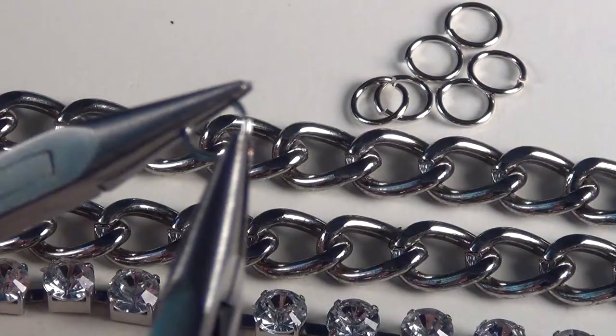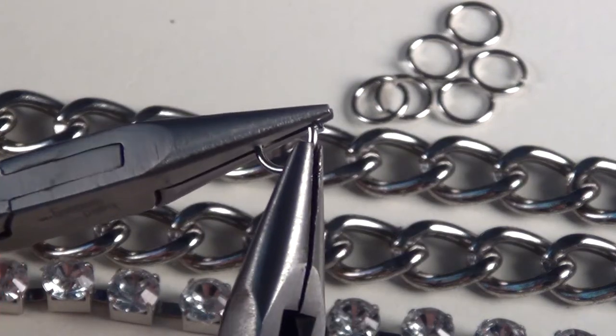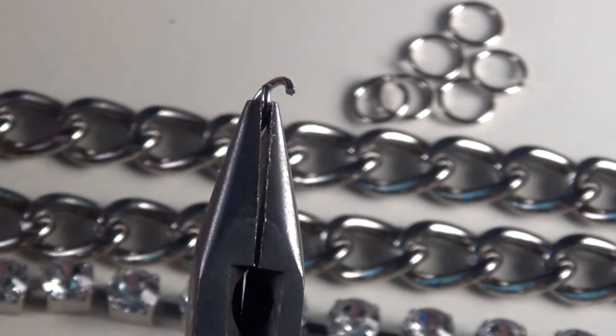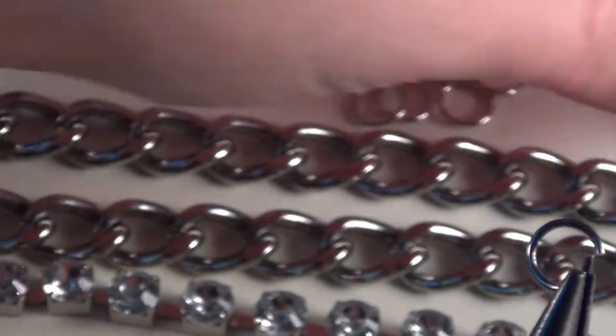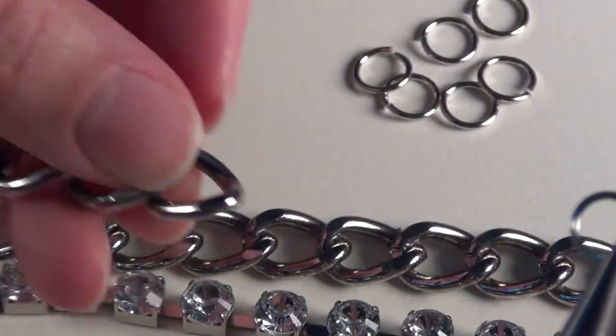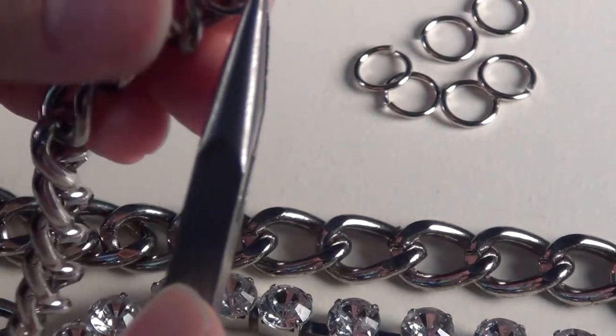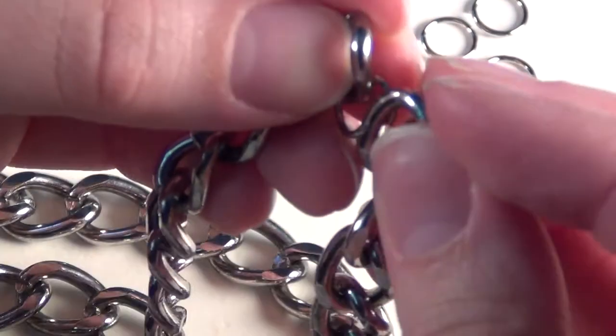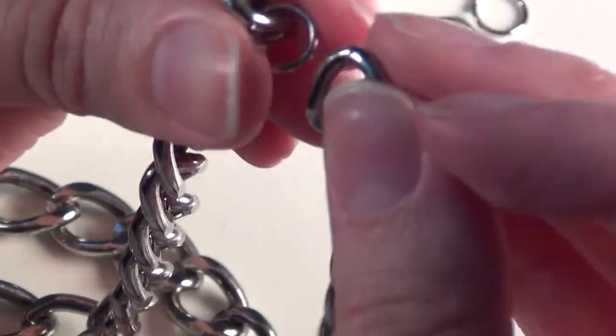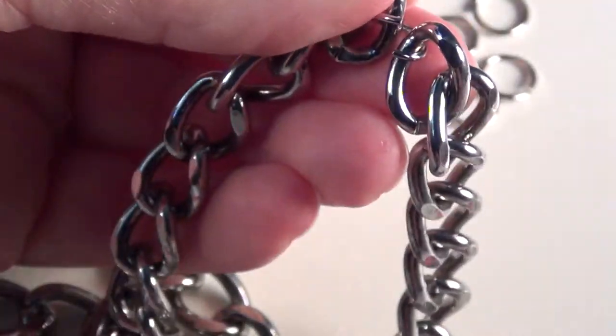Next I'm going to take one of my jump rings. I'll just open that up with my two pairs of pliers like so, and I'm going to connect the first link on each of my length of chain with a jump ring.